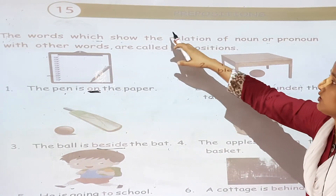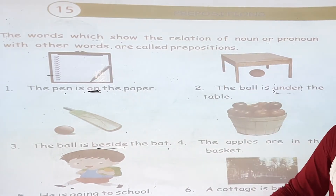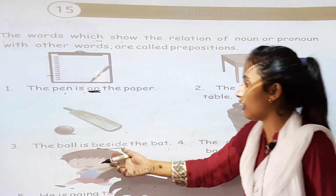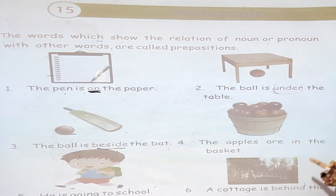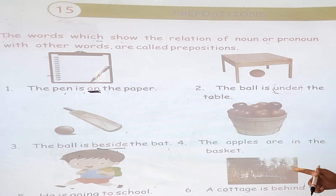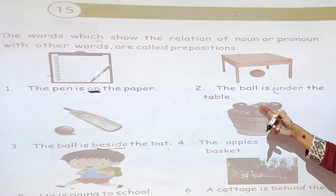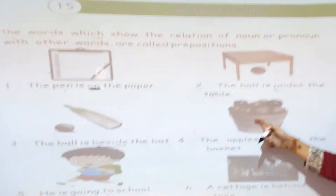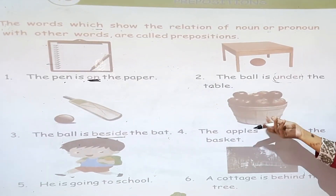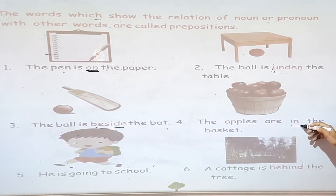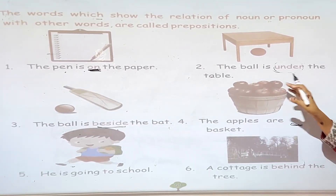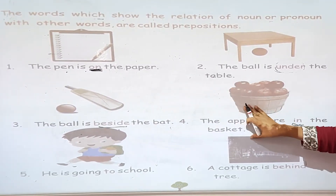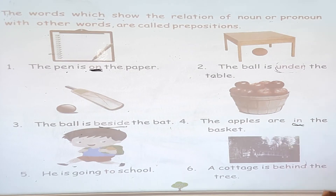The word which shows the relations of another word is called a preposition. For example, the apples are in the basket. So 'in' shows the relation — the apples are inside the basket. Because of the preposition word, it shows the relation of a noun.